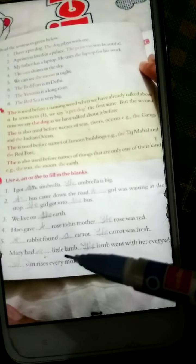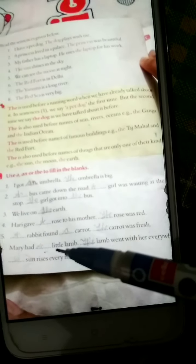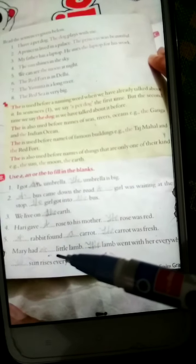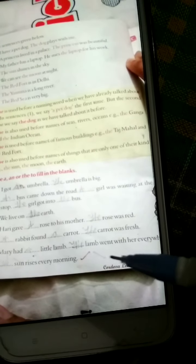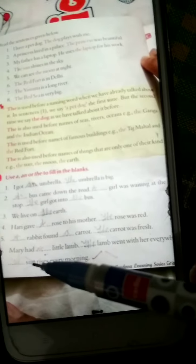Mary had dash little lamb. Little, 'l' sound, it's a consonant, write here 'a'. Dash lamb went with her everywhere. Again talking about lamb, so we will write here 'the'.